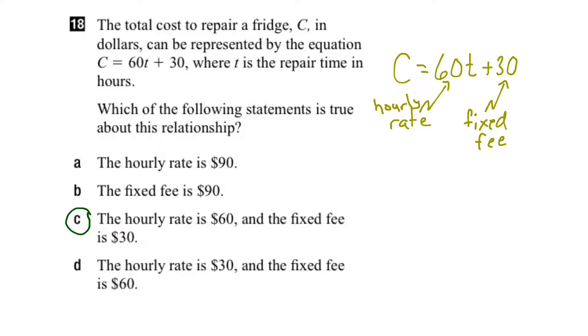Now if we weren't quite sure, what we can do is put down a table of values here with T as our independent variable and C as our dependent variable and just put in a couple of options like time 0, 1 and 2.